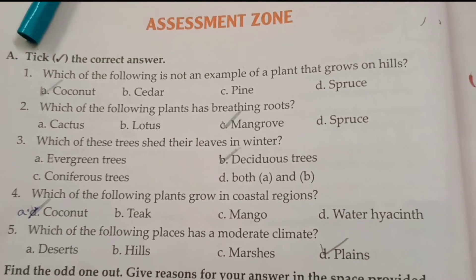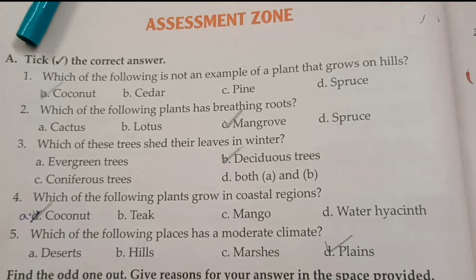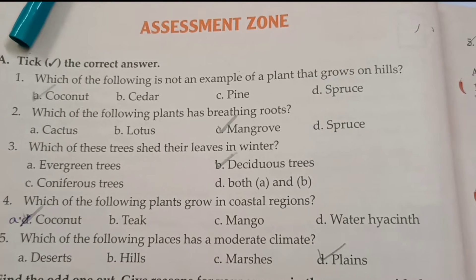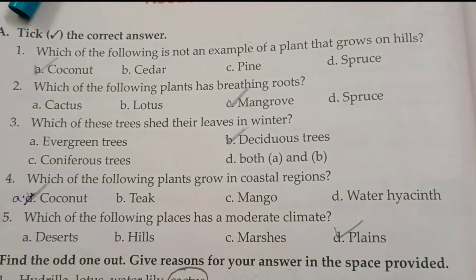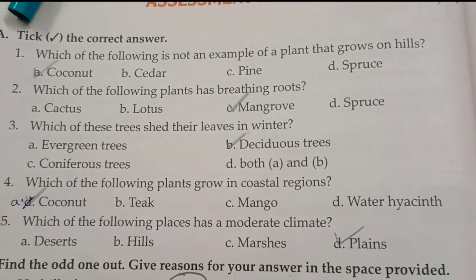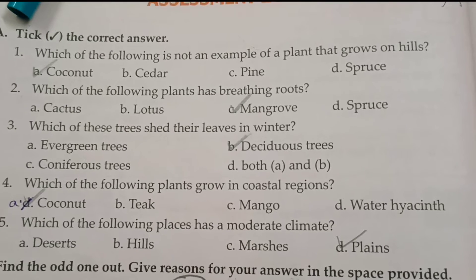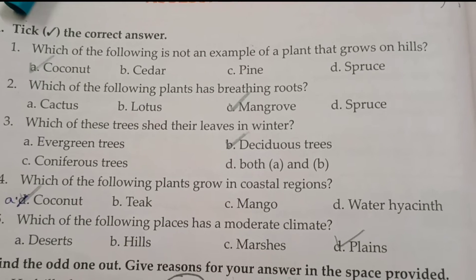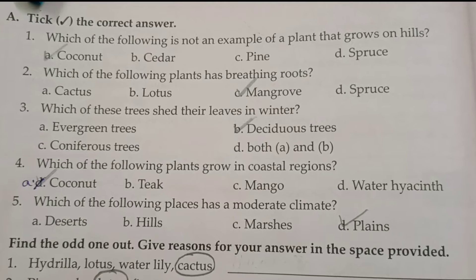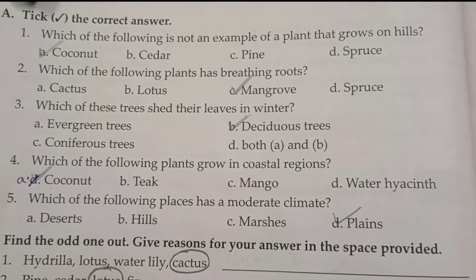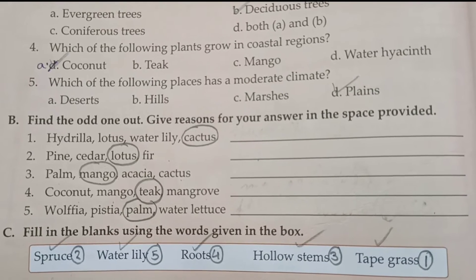First we will solve the objective parts, then the question-answer part. Section A: Tick the correct answer. Number one: which of the following is not an example of a plant that grows on a hill? The answer is option A — coconut. Number two: which of the following plants has breathing roots? The answer is option C — mangrove. Number three: which of these trees shed their leaves in winter? The answer is option B — deciduous trees. Number four: which of the following plants grow in coastal regions? The answer is option A — coconut. Number five: which of the following places has a moderate climate? The answer is option G — plains.